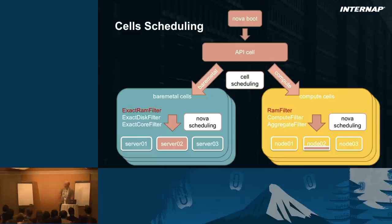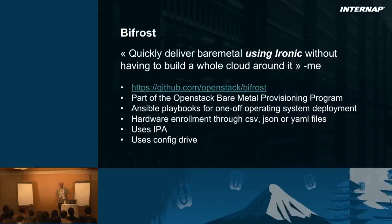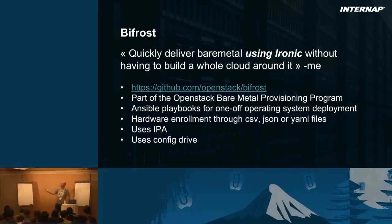If you're trying to deploy Ironic in a private environment, look at Bifrost. It's a program from OpenStack that enables Ironic deployments provisioning bare metal servers without having to build the whole cloud around it — especially Swift, which is a requirement for Ironic. It has hardware enrollment through a CSV file, uses IPA and config drive. So for a quick private Ironic deployment, Bifrost is probably better than the whole thing.